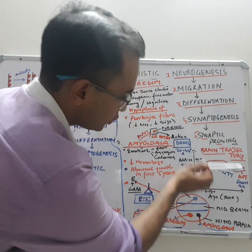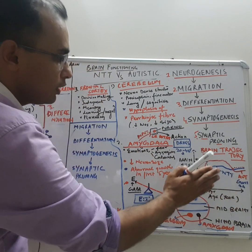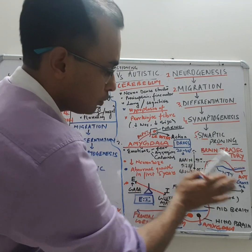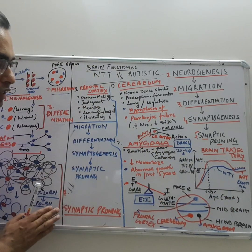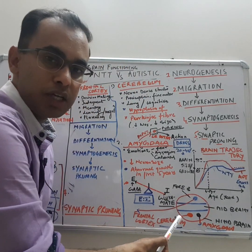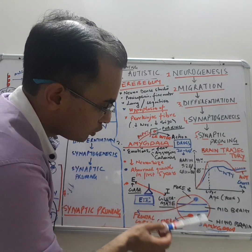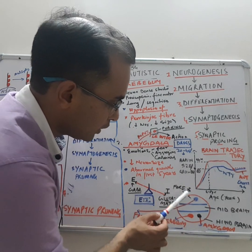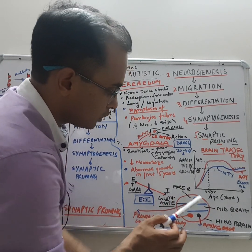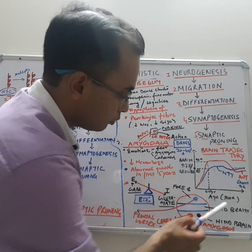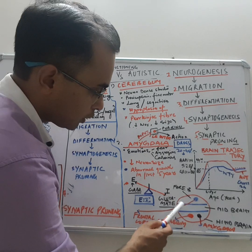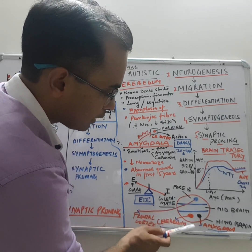This is the main crux of the whole lecture. Now, what are the brain structures involved and how does their growth differ? This is a simplified hypothetical diagram of the brain. There are three parts: the forebrain, the midbrain, and the hindbrain. The forebrain is the front portion, the midbrain is the middle, and the hindbrain is the last portion. For now, just focus on the forebrain and the hindbrain.